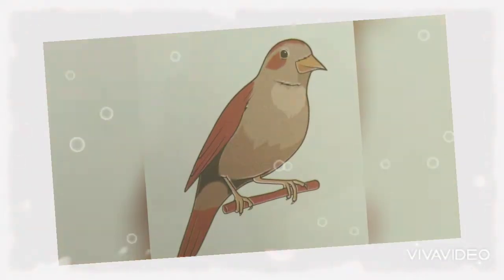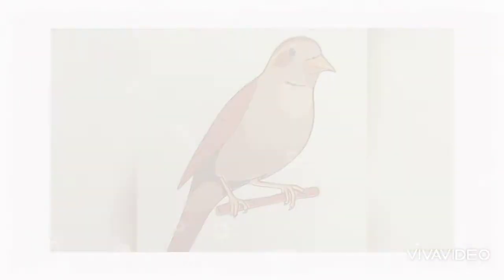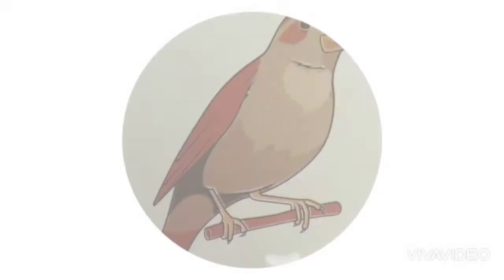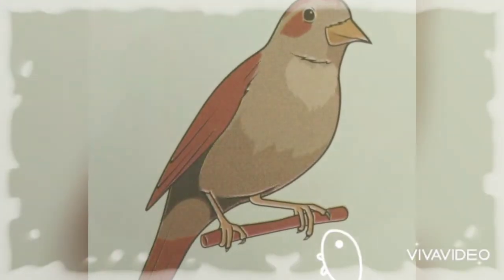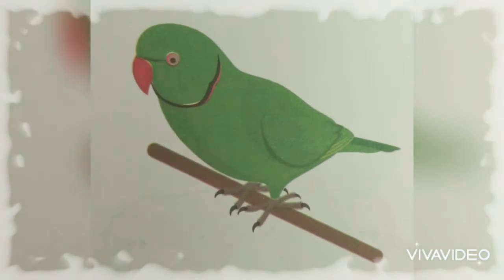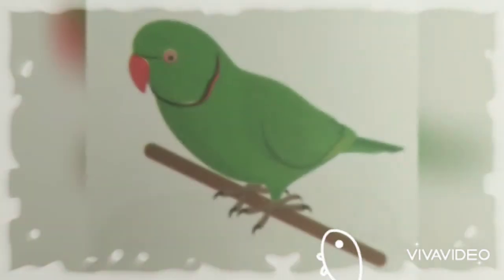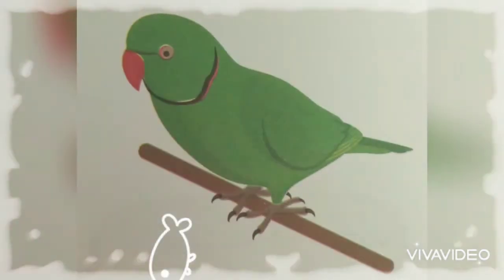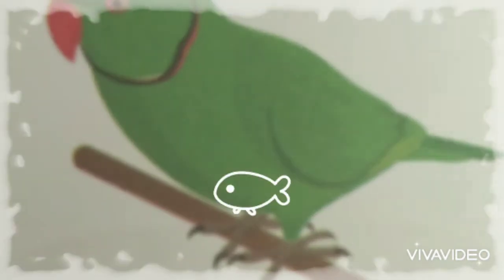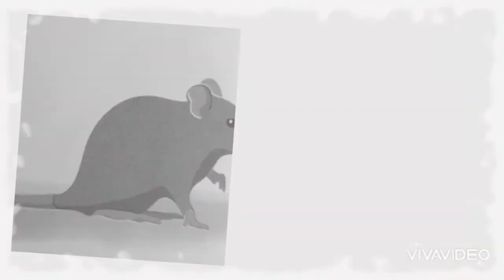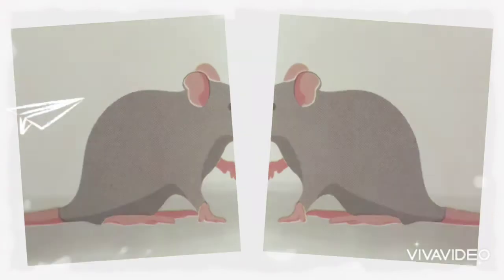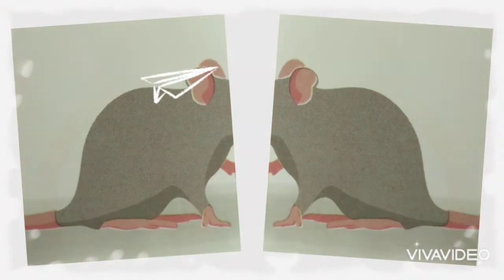Have you all seen a butterfly? What is this? This is a nightingale. What is this? This is a parrot — the one we call 'Mithu'. And our last picture is mouse. What is this? This is a mouse.